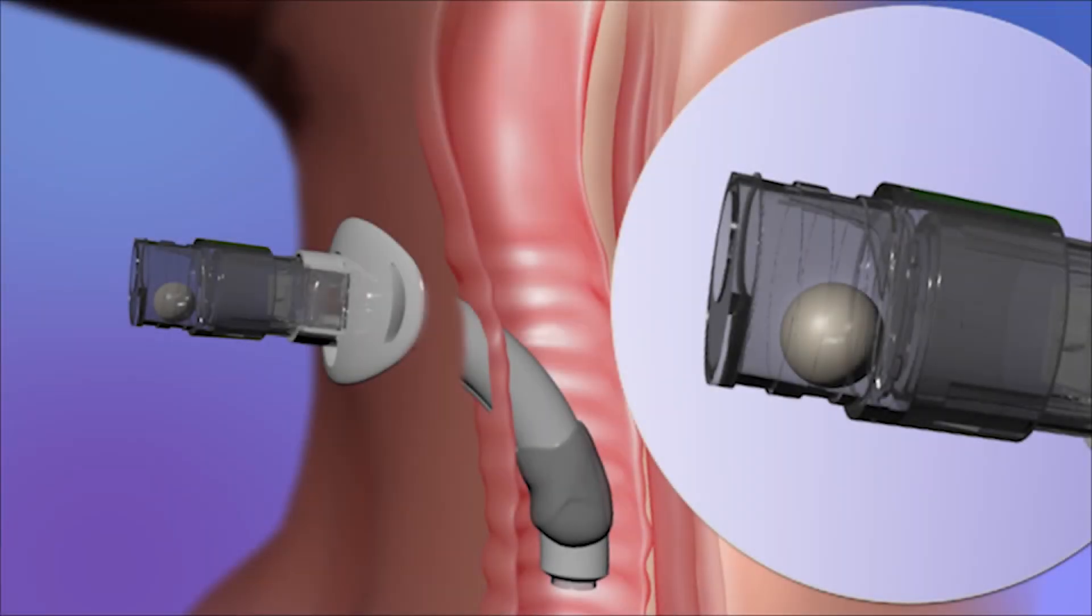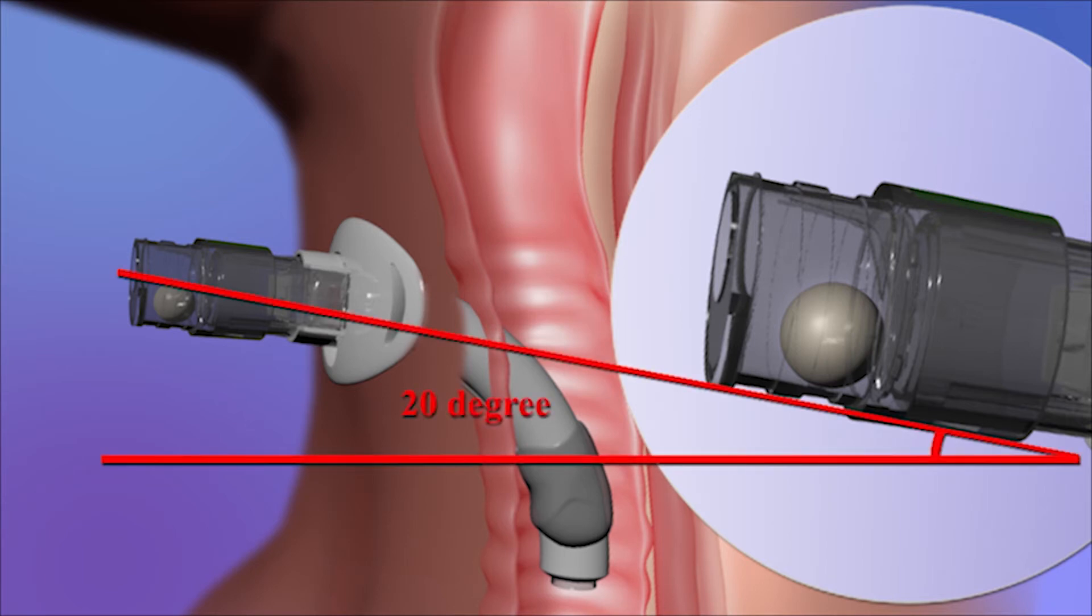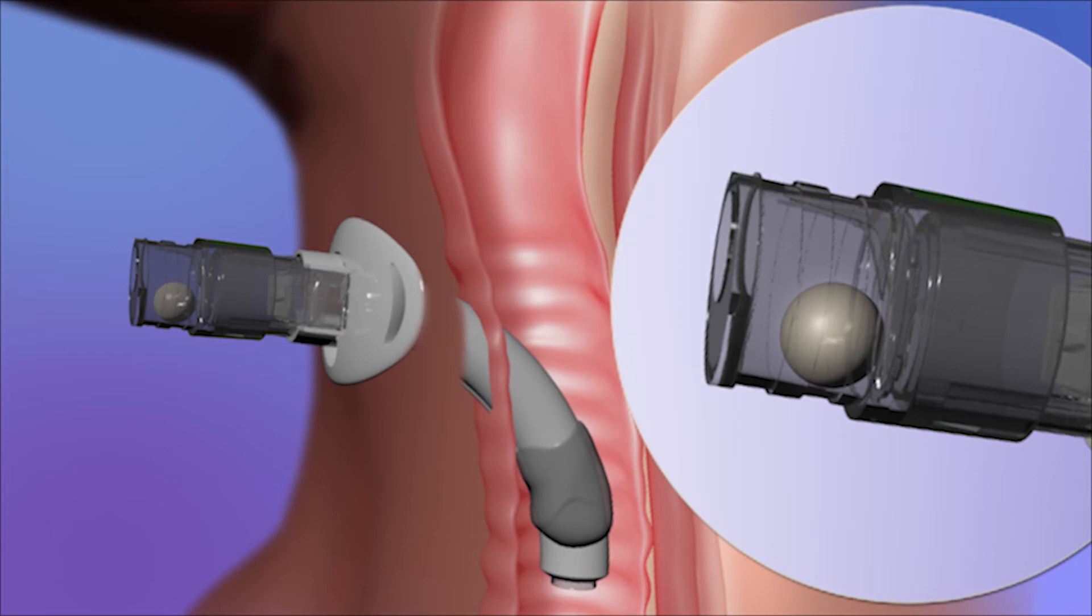When the patient is standing or sitting normally in a chair, the tracheotomy tube and the speaking valve are typically tilted slightly upward at an angle about plus 20 degrees above a theoretical horizontal line.